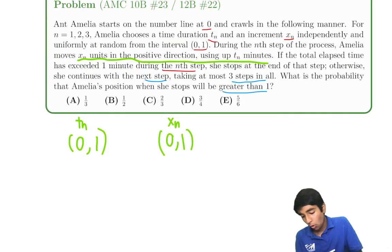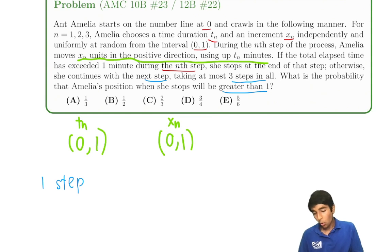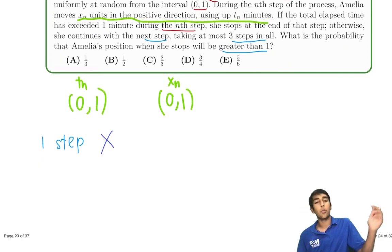So what if Amelia only takes one step? What's the probability Amelia will take only one step? Well, for Amelia to take only one step, the total elapsed time must have exceeded a minute. But this is the open interval from 0 to 1. The elapsed time we're taking is less than 1 always, so it can never exceed a minute. So one step is never even possible, so we don't even have to worry about it.